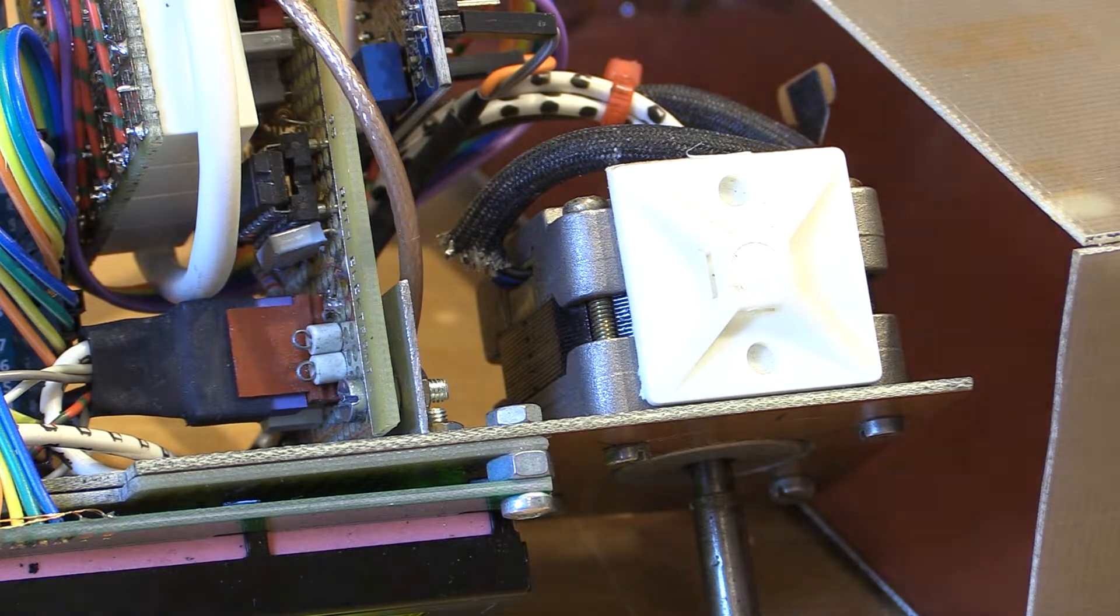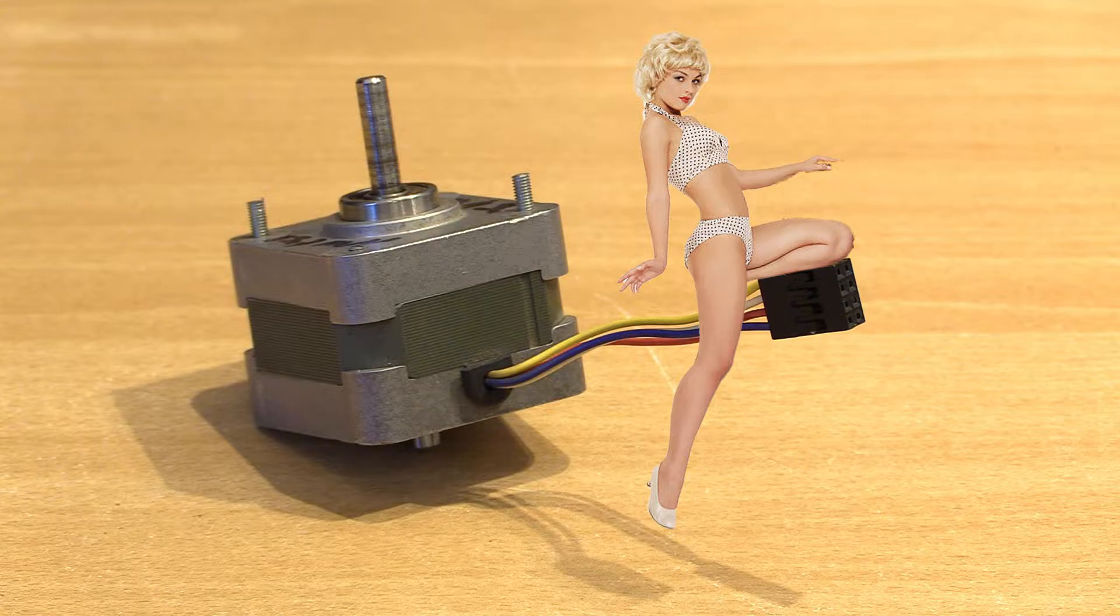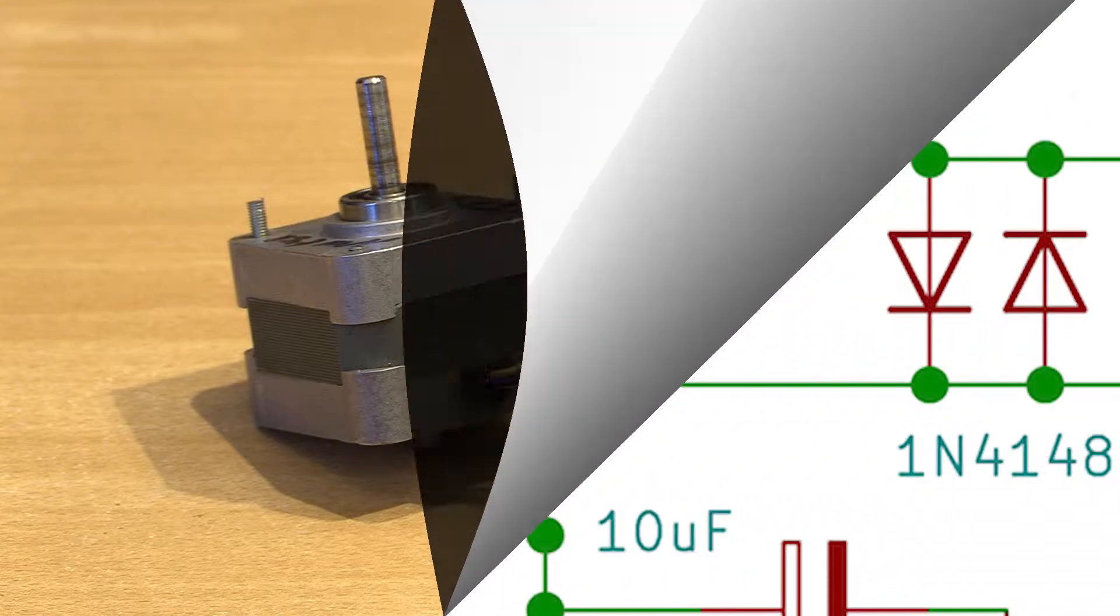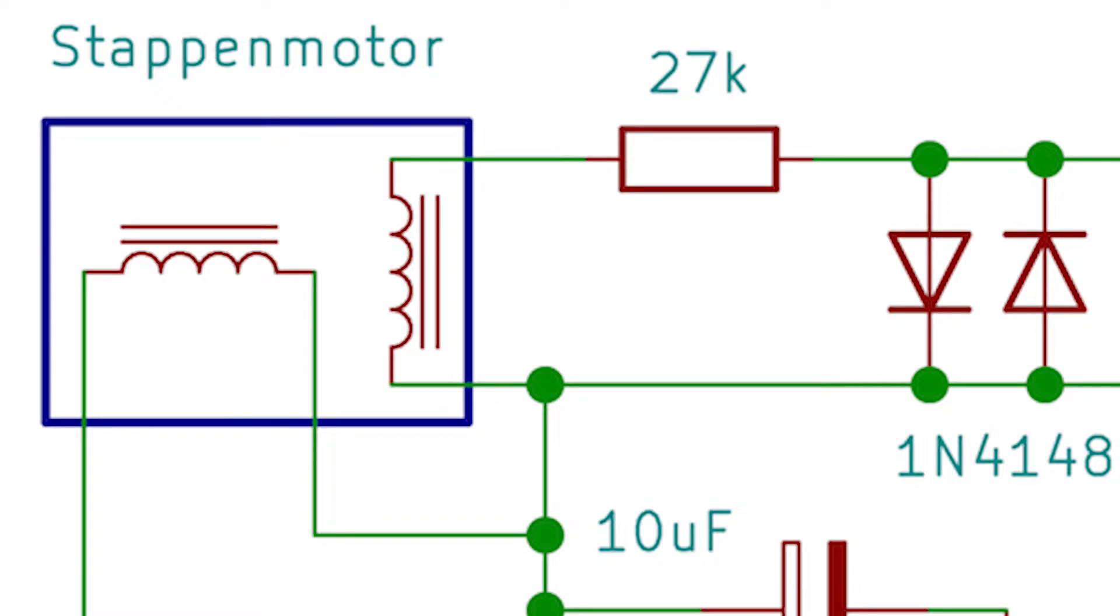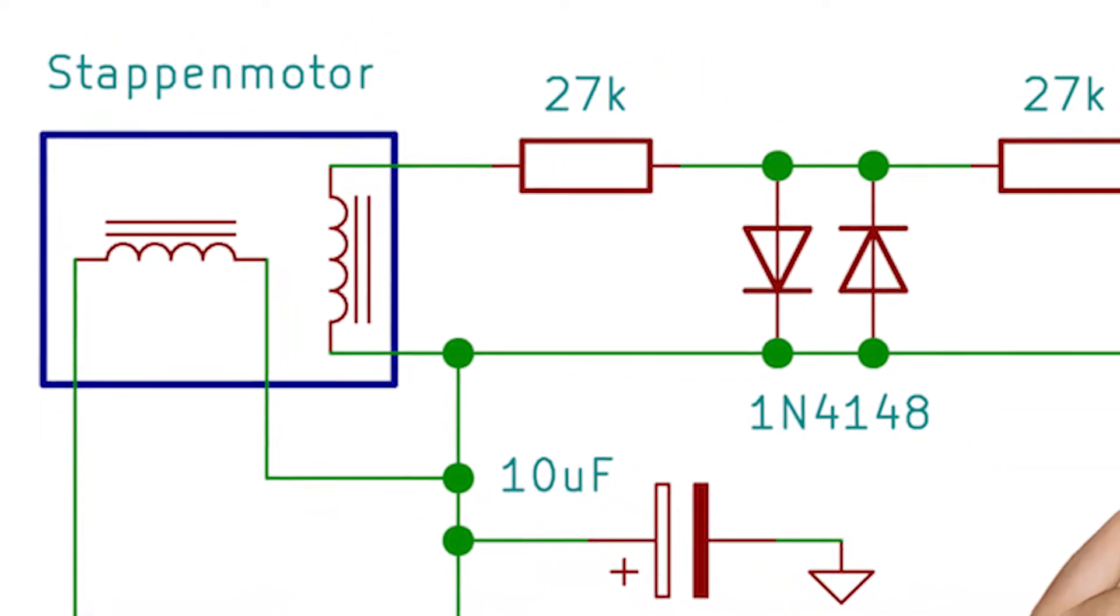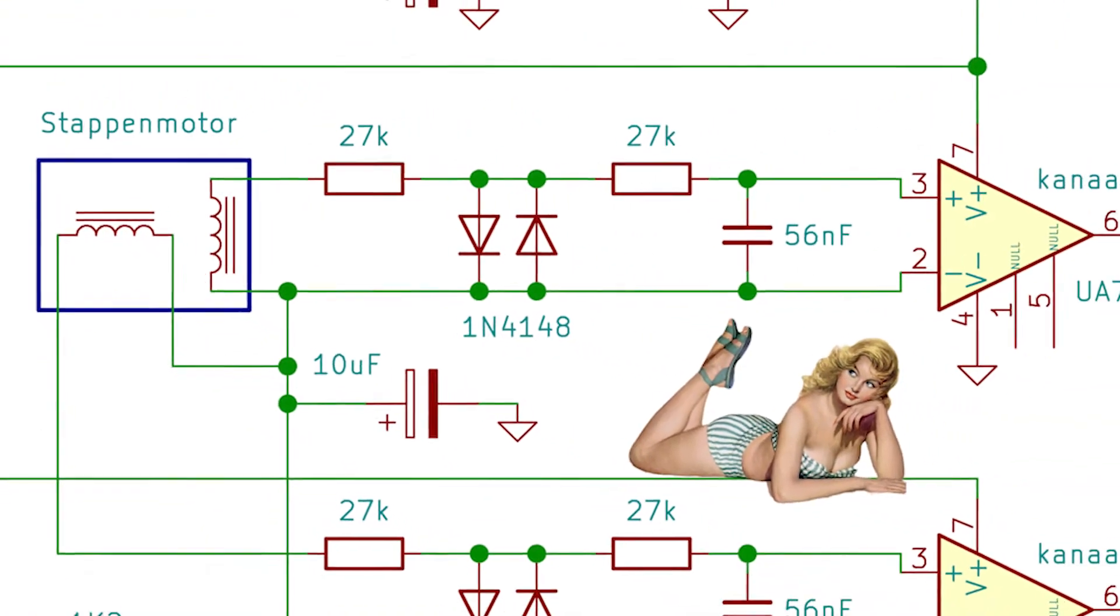There were four wires coming out of the stepper motor, so I presumed the internal coils were 90 degrees shifted to one another. Checking this on the scope again confirmed the assumption. So this motor could function as a rotary encoder.